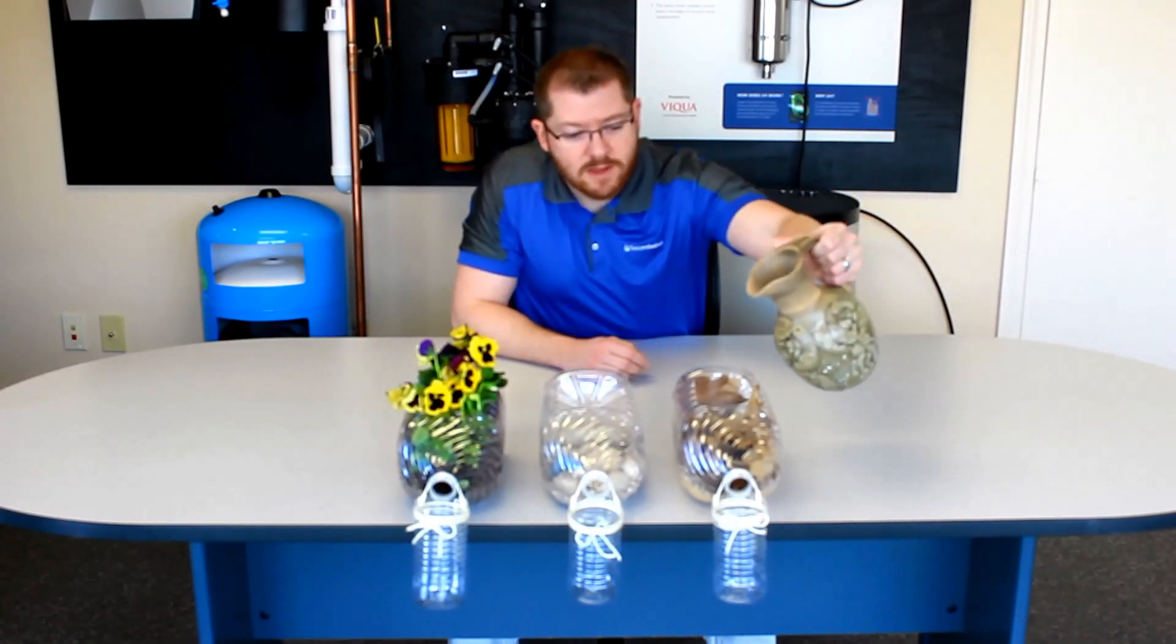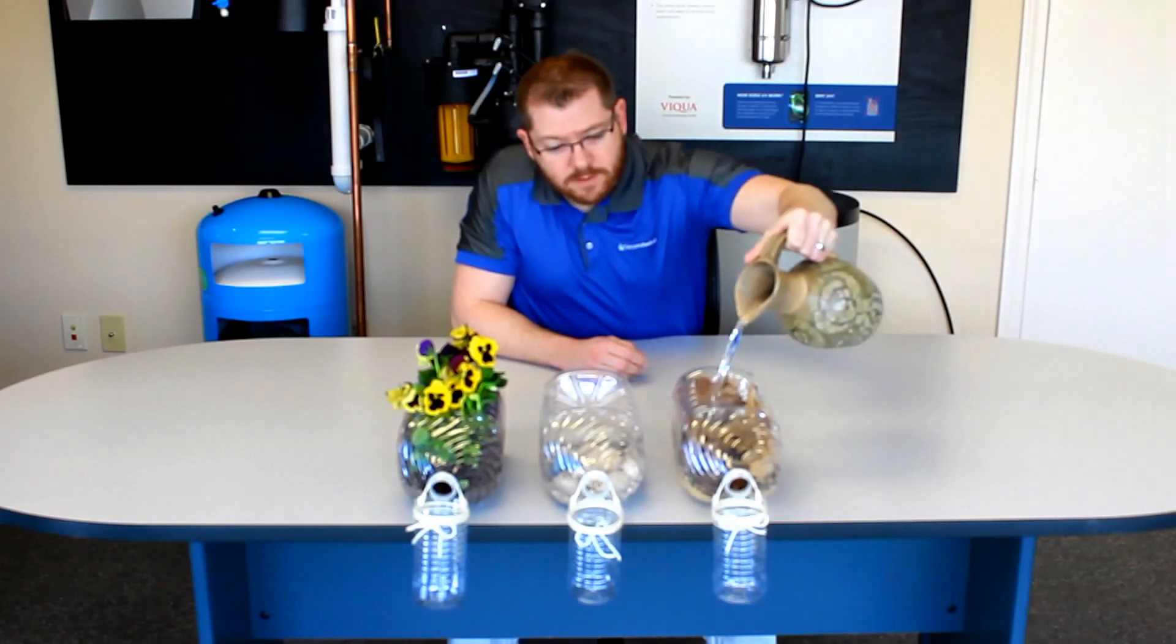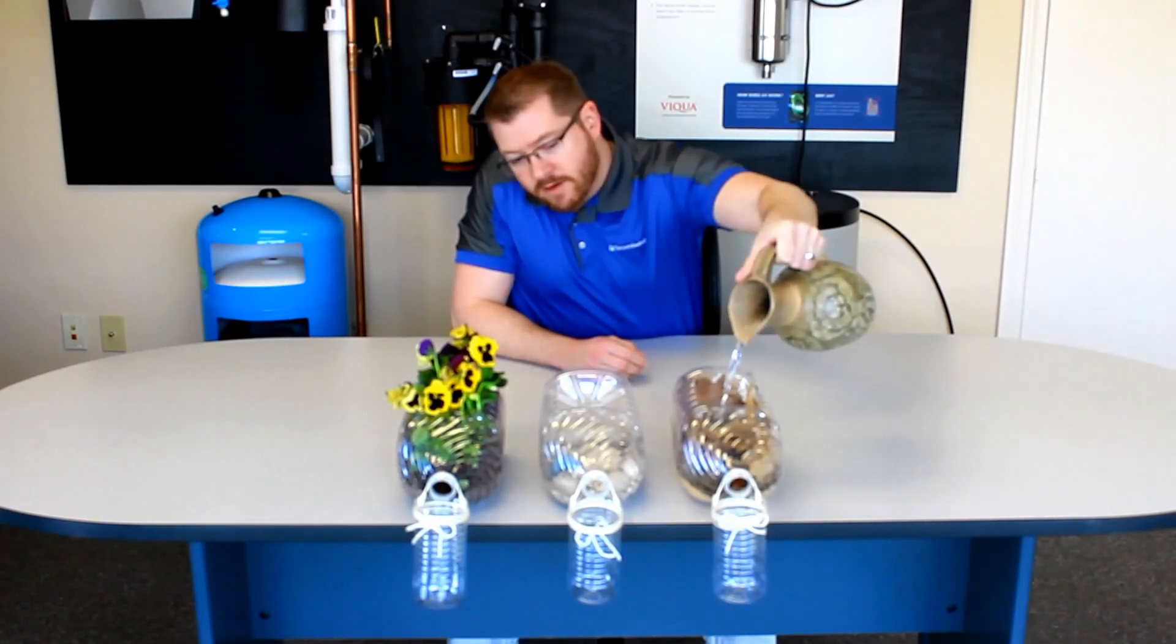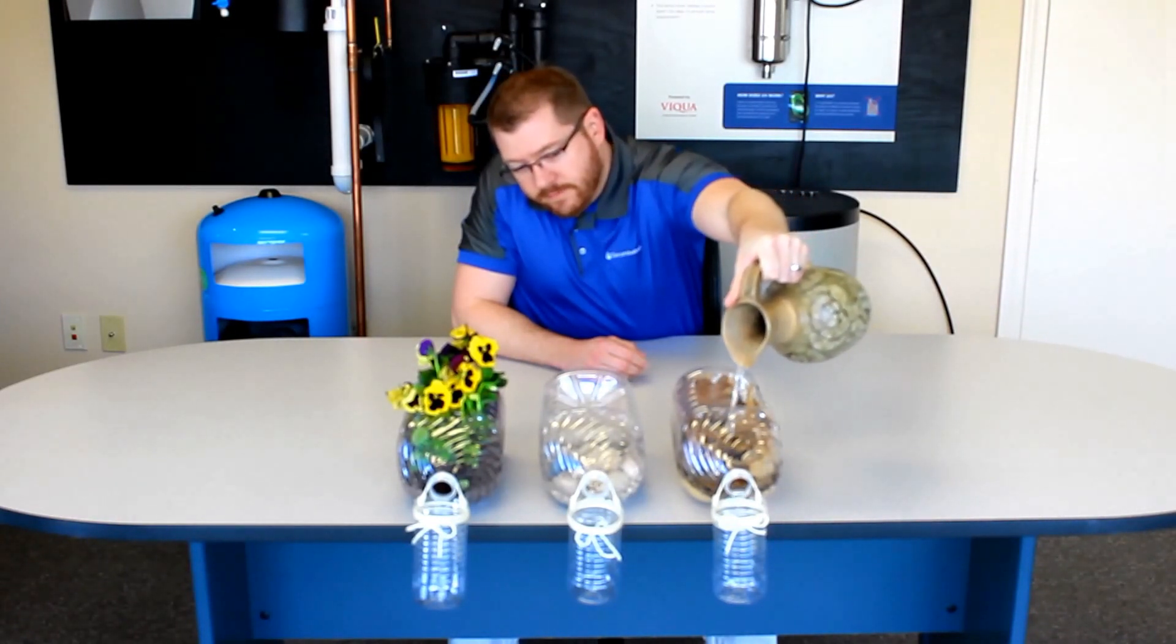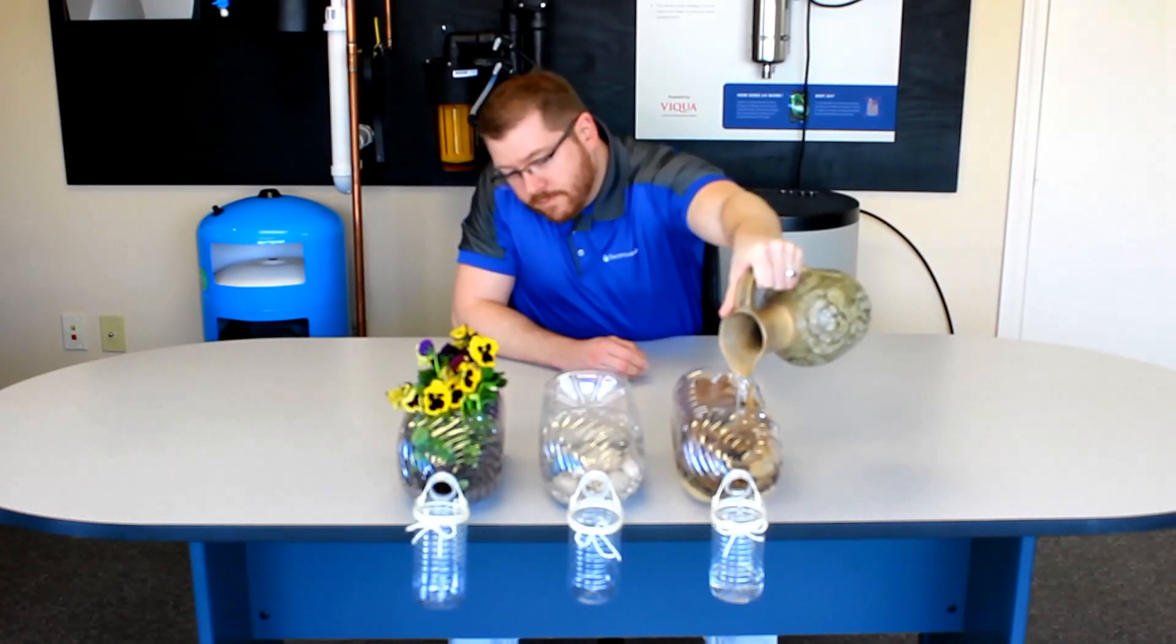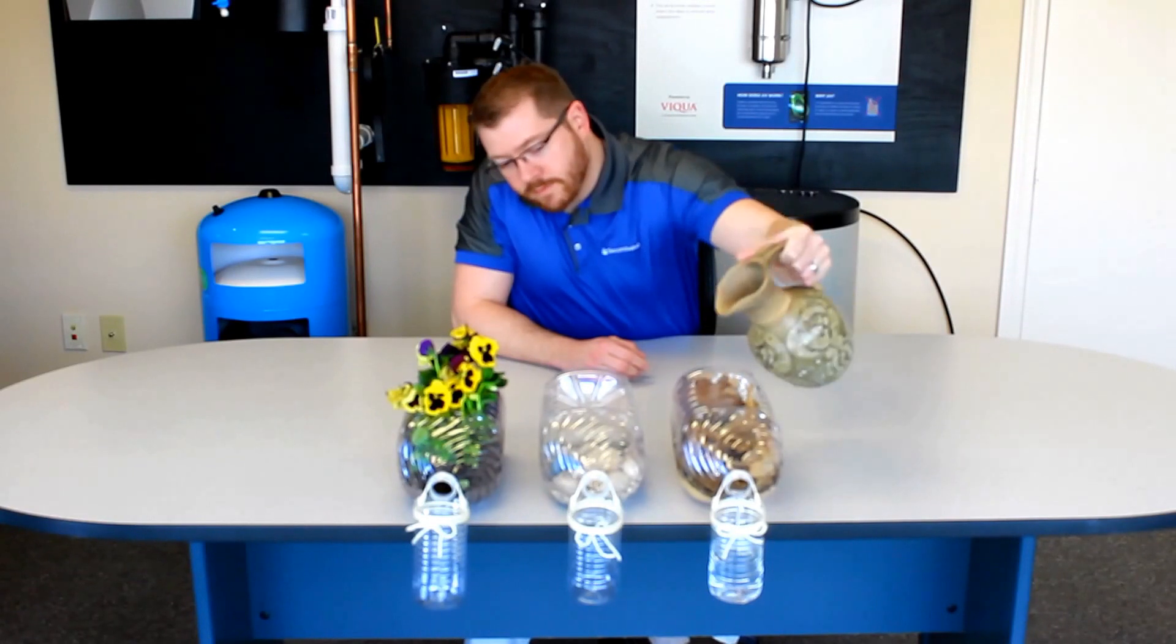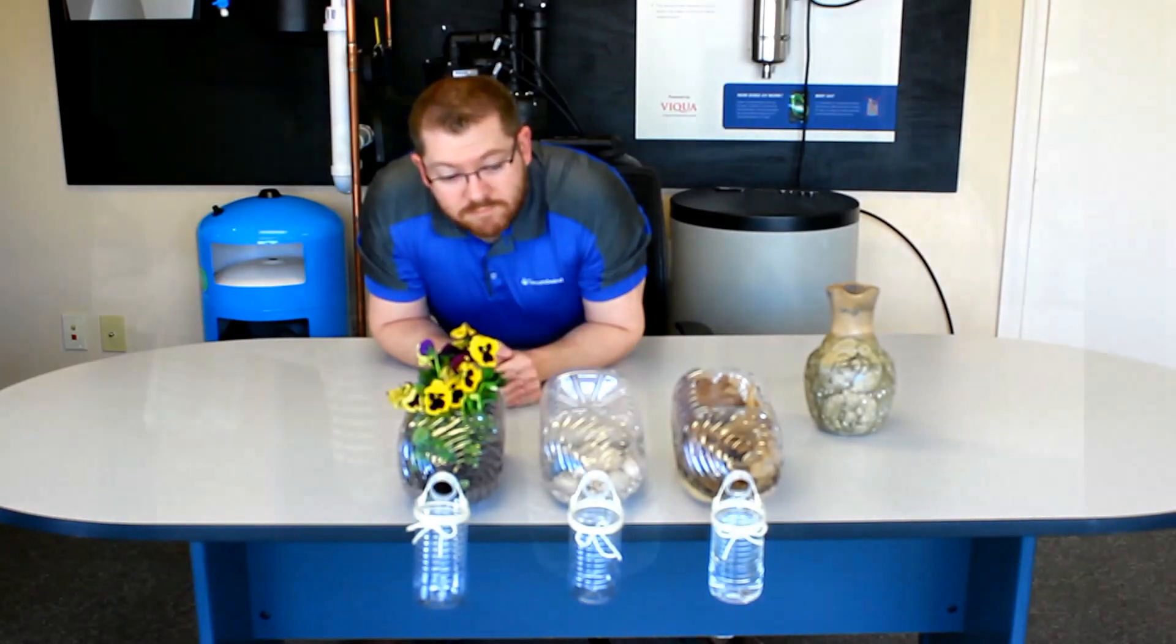So we're going to take this carafe right here full of water and we're going to first start with the leaves. And we're just going to get it saturated enough until water starts to pour out on the other end. And as you can see the water coming out on the opposite end looks pretty clear.